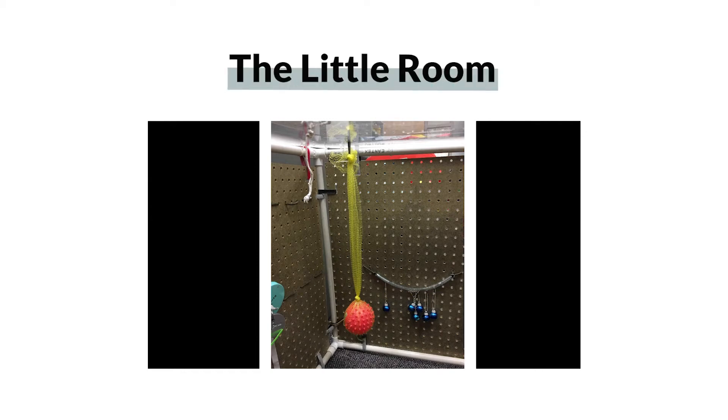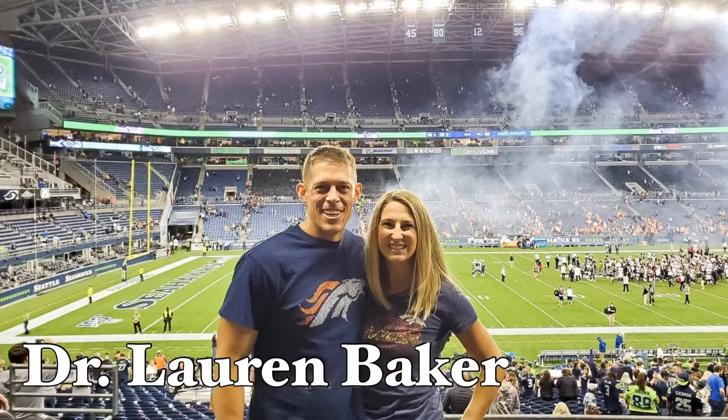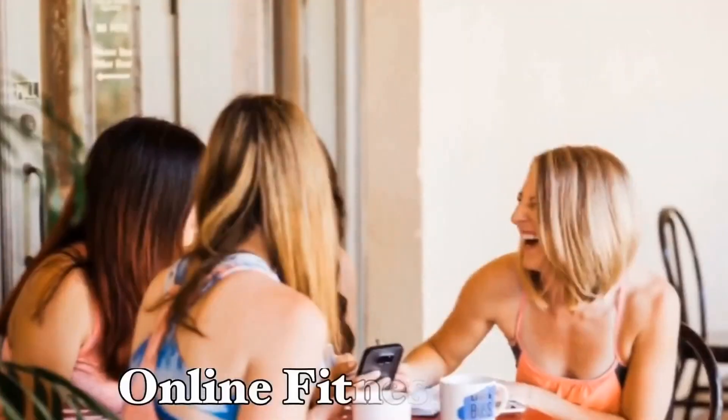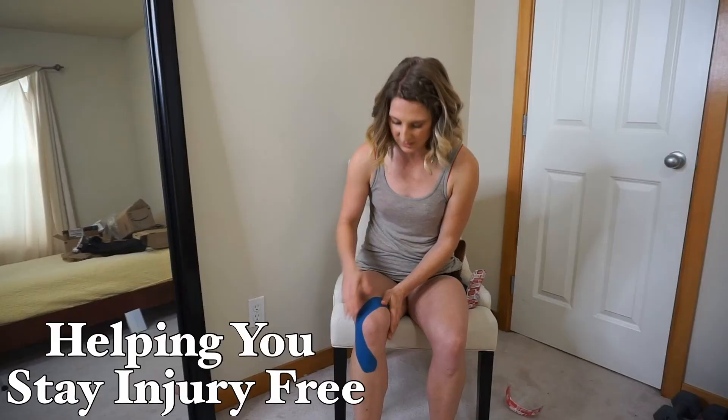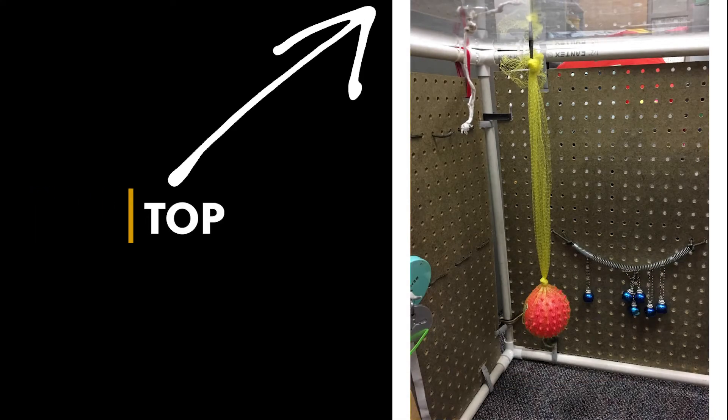Today we're going to talk about a little room, and essentially this is what a little room looks like. It is a three-walled structure with a plexiglass top, and the objects are hanging from all sides of the structure as well as from the top.